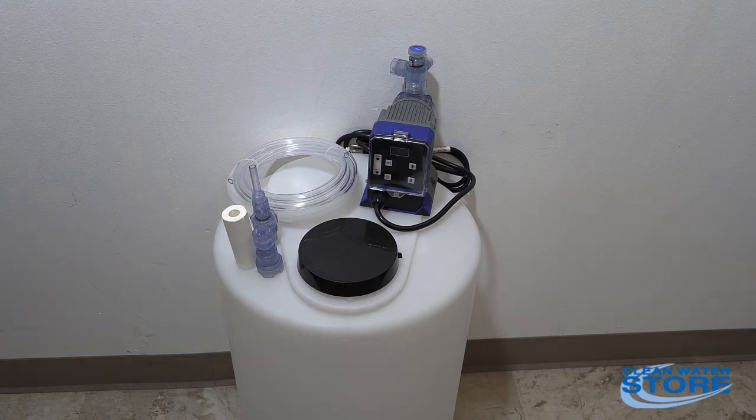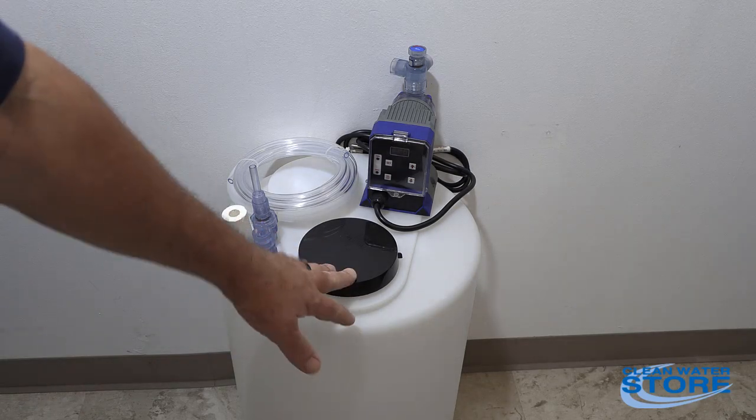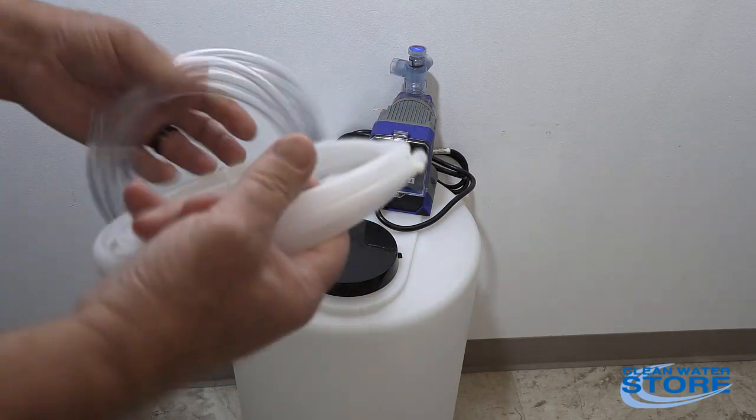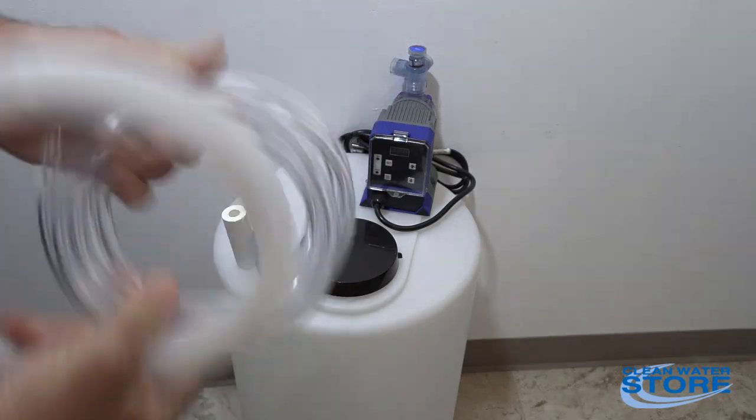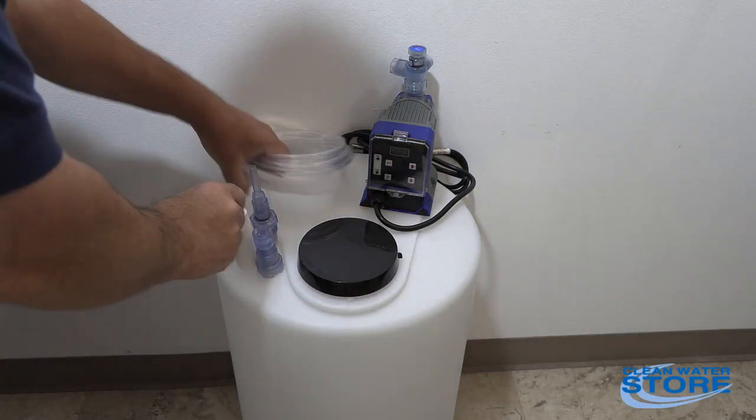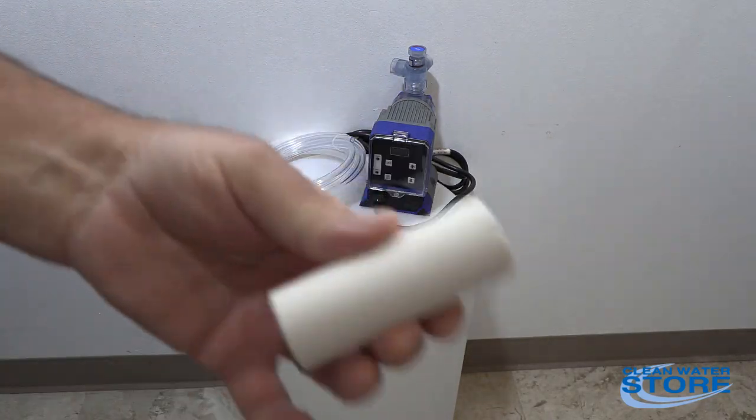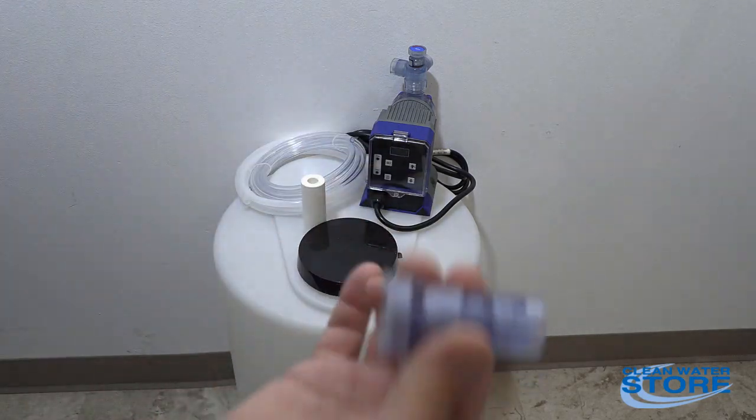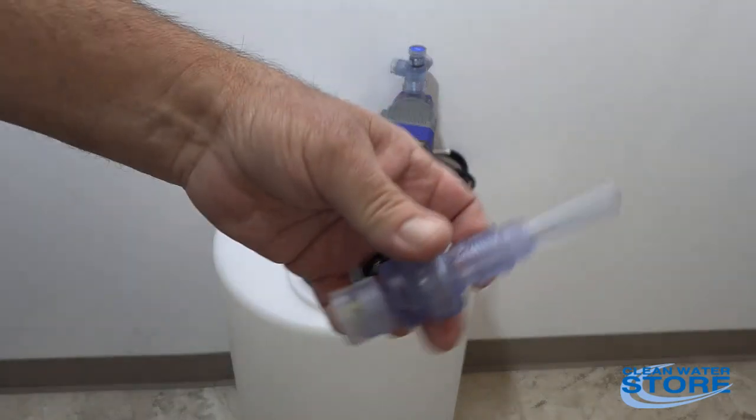Having everything unboxed, we have our 15-gallon tank, our pump, two types of tubing—one is a harder tubing and another one that's softer tubing. We have our weight, and we have our foot valve and the injection check valve.